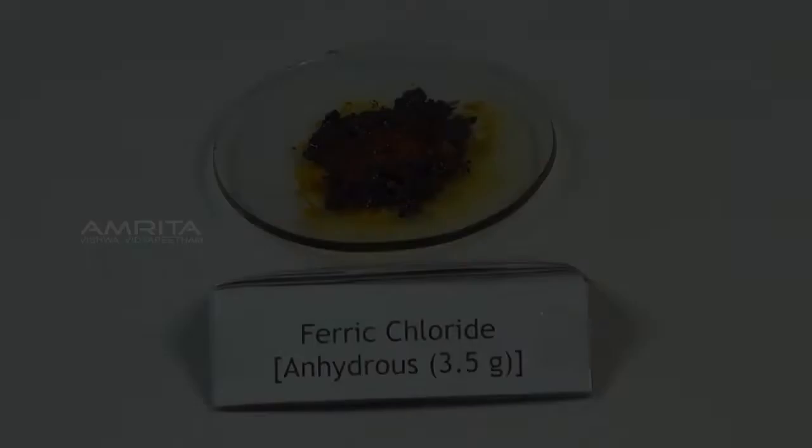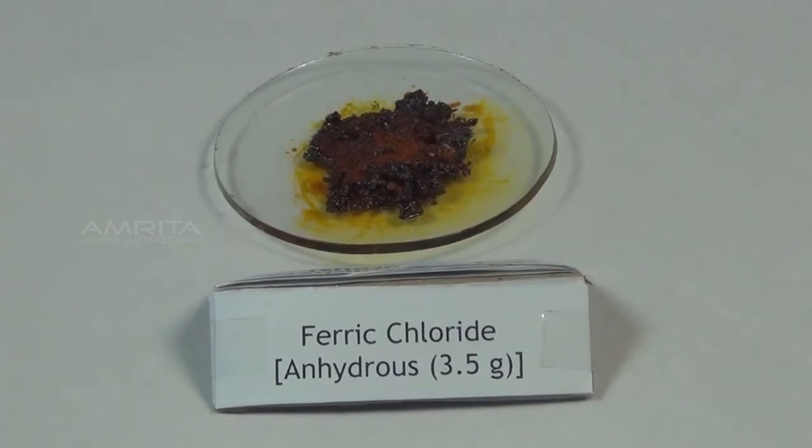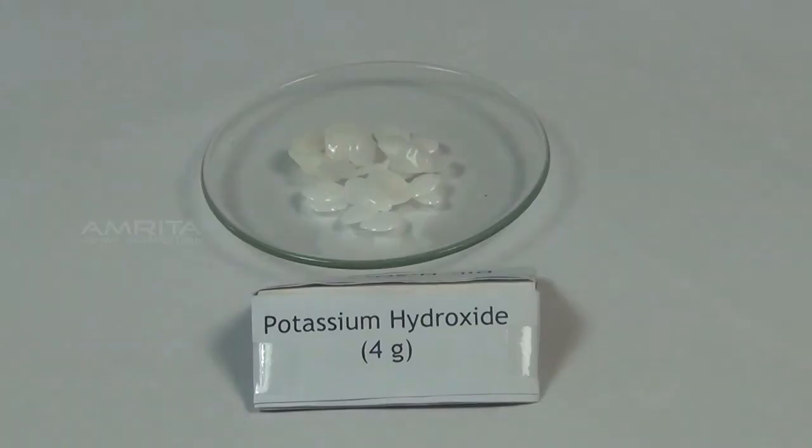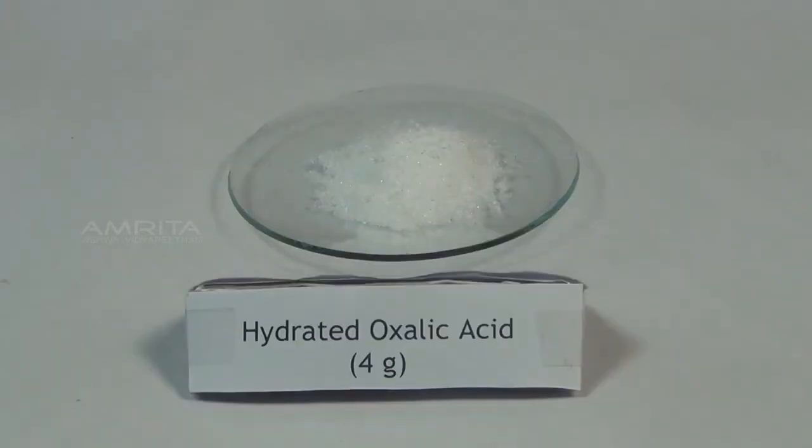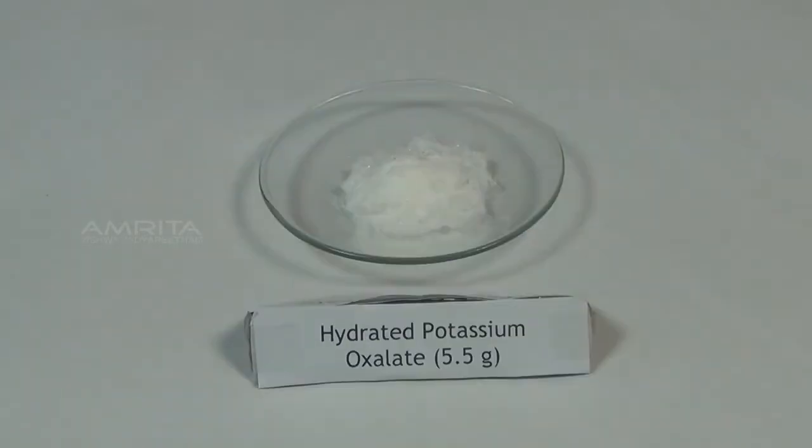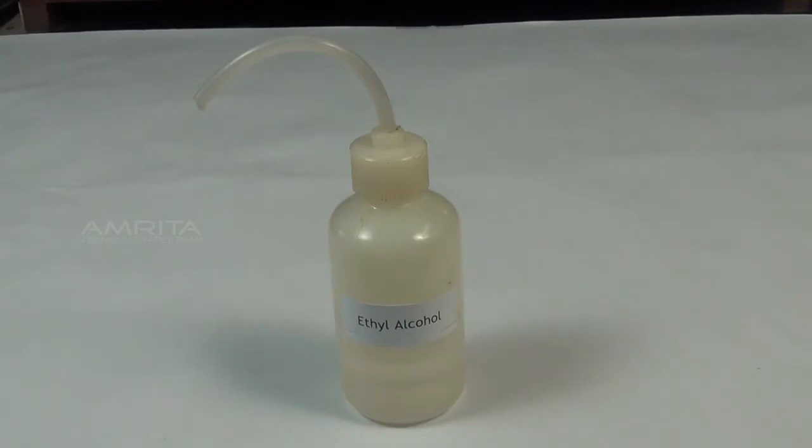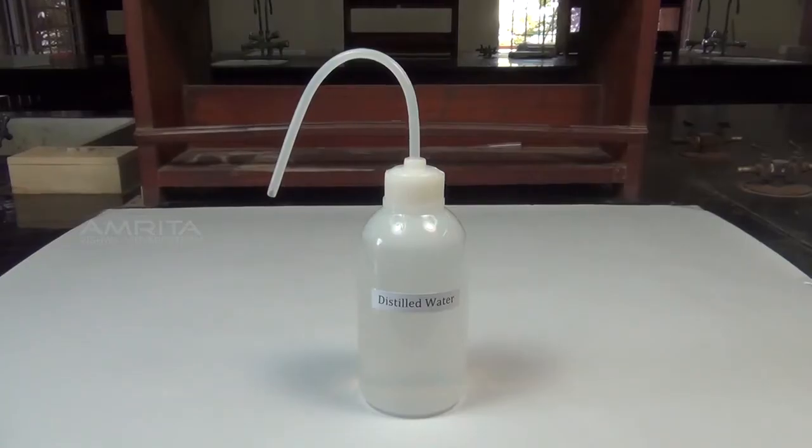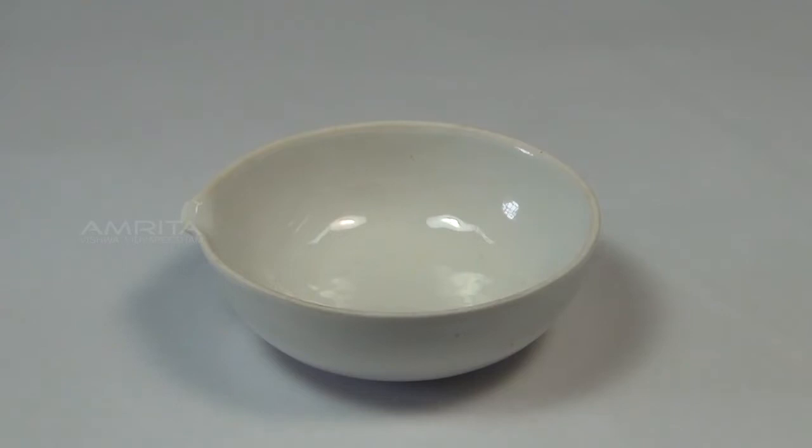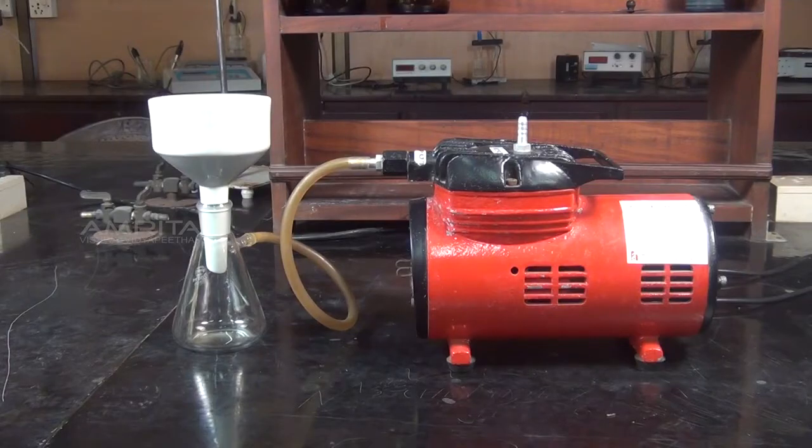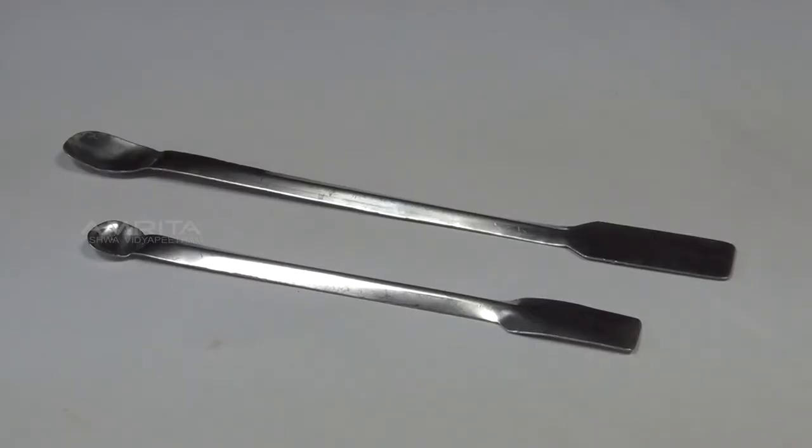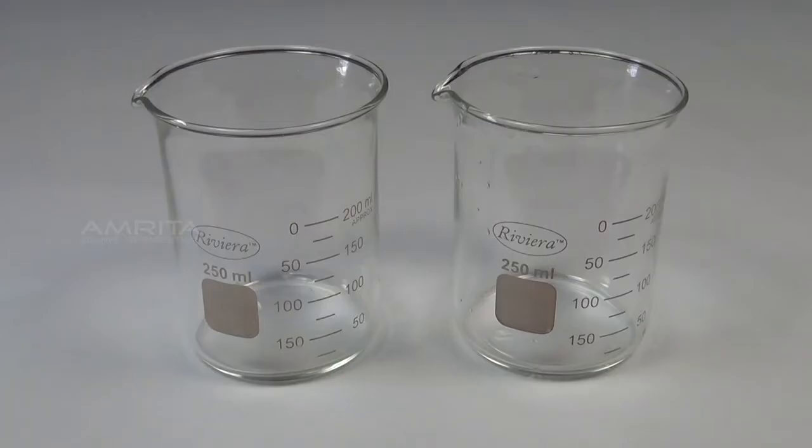Materials Required: 3.5 g anhydrous ferric chloride, 4 g potassium hydroxide, 4 g hydrated oxalic acid, 5.5 g hydrated potassium oxalate, ethyl alcohol, distilled water, cold water, china dish, Buchner funnel, spatula, glass rod, beakers, measuring jars, trough, watch glass, filter papers, black paper, sand bath.